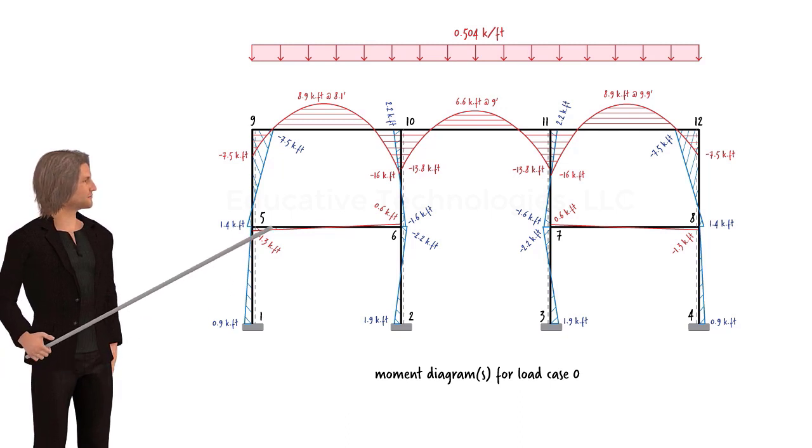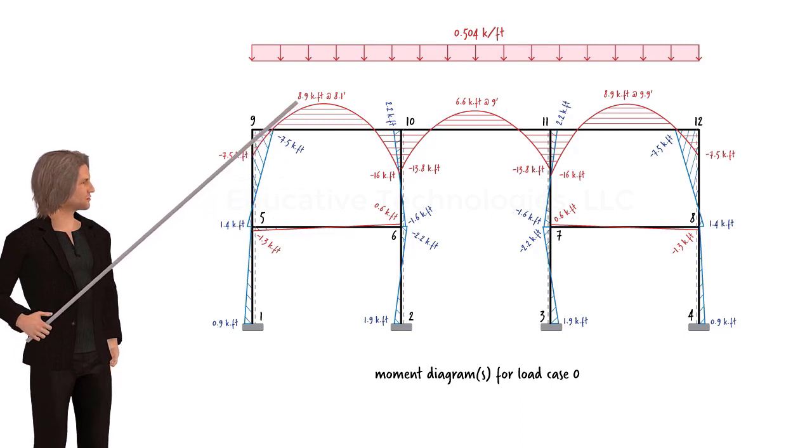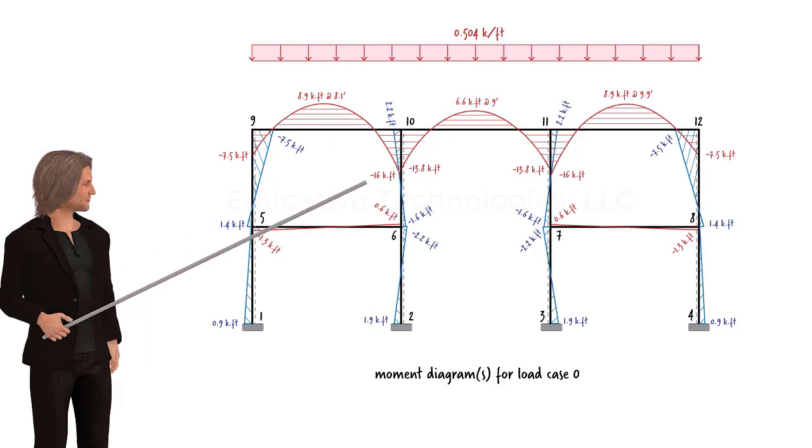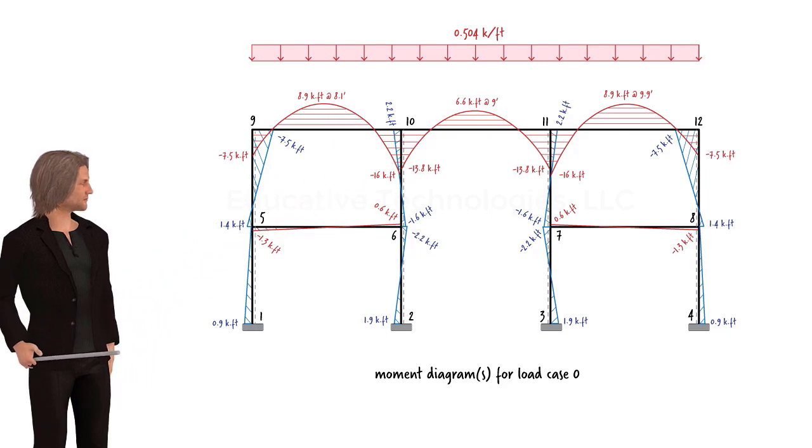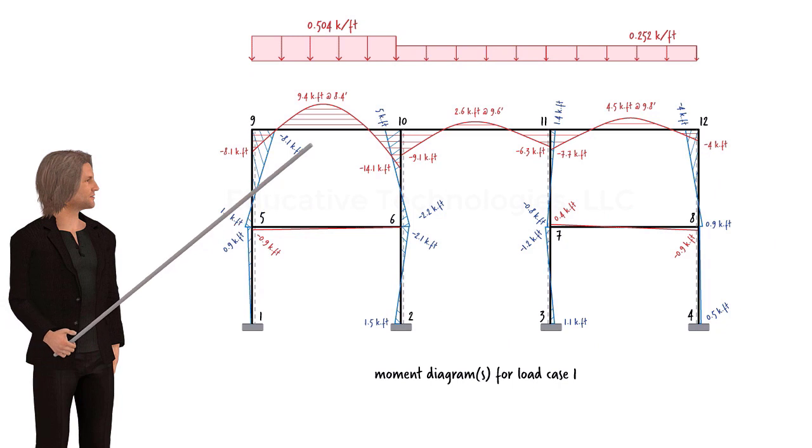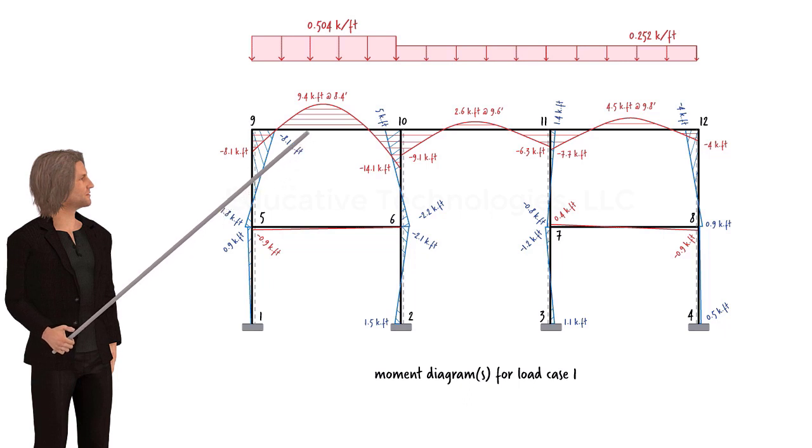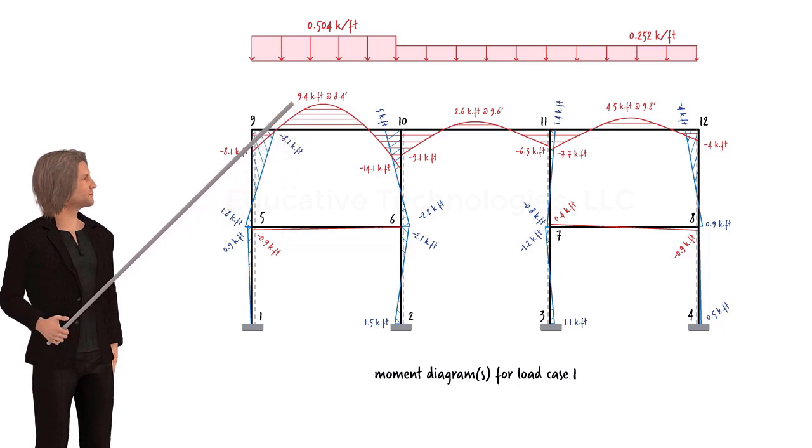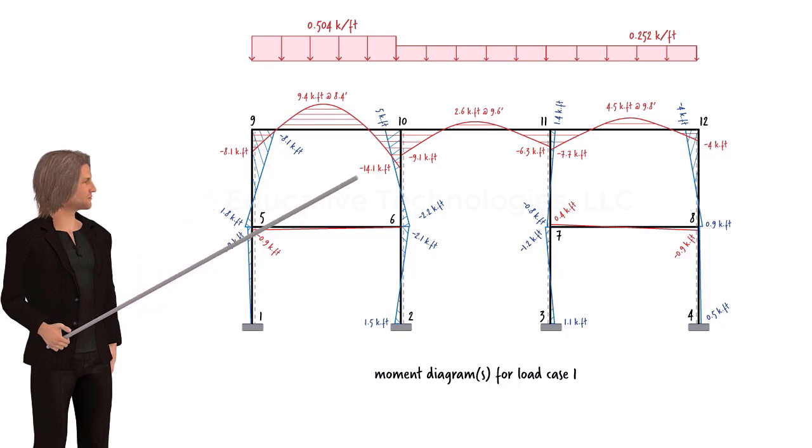For example, bear in mind the maximum positive and negative moments for this member, which are positive 8.9 and negative 16 respectively. Here is the moment diagram for the same member but under loading case 1. Note that the maximum moment in the member has gone up to 9.4, while the negative moment is reduced to negative 14.1.